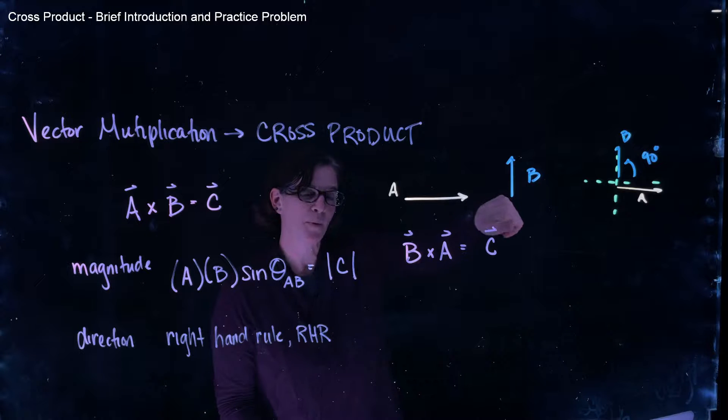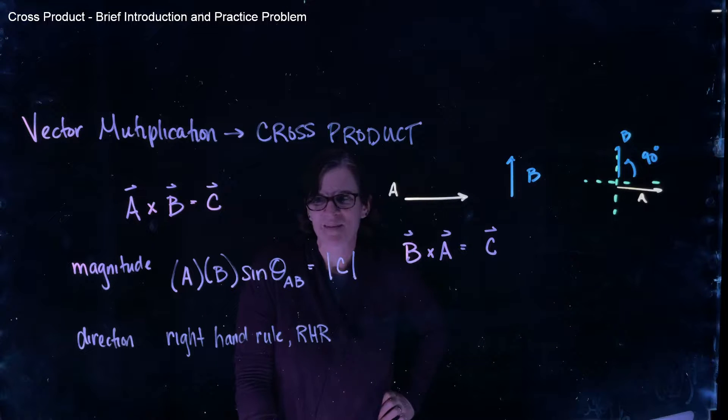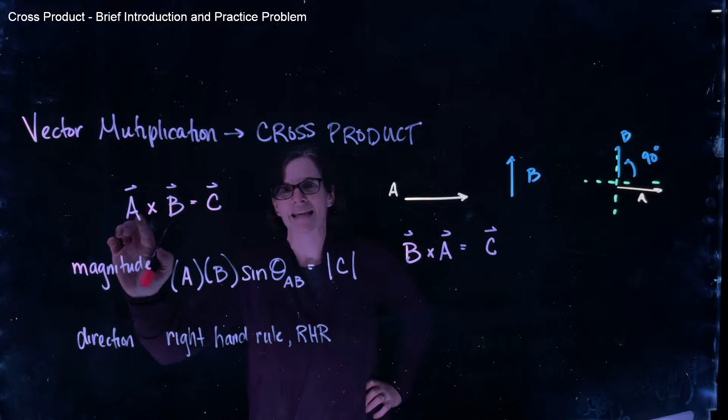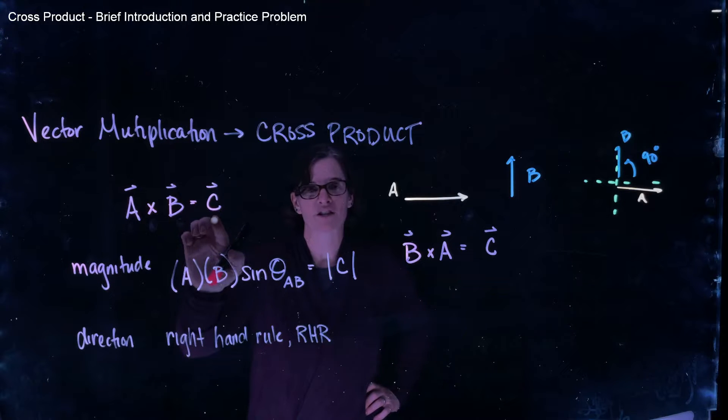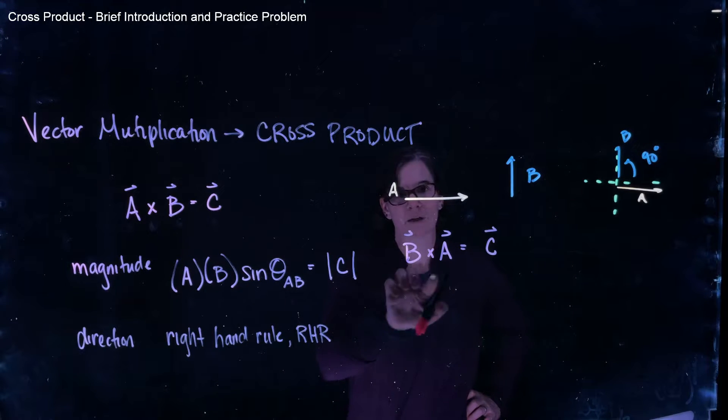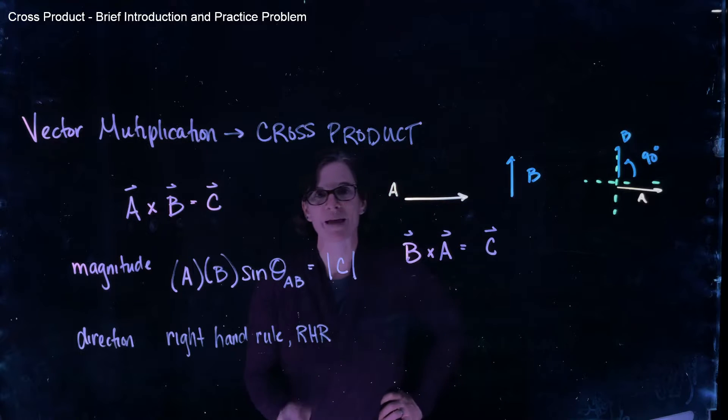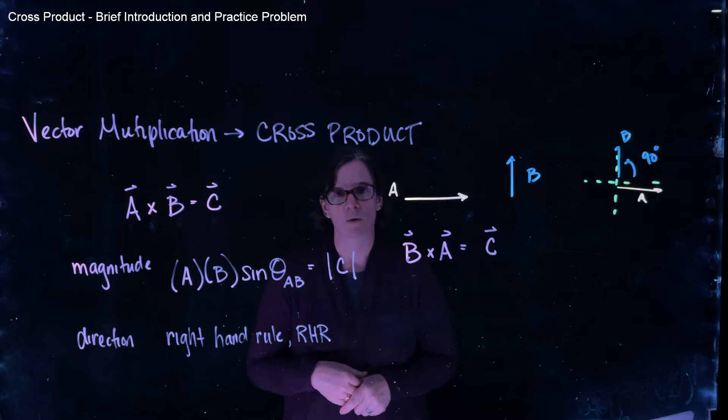And my thumb points in the direction of C. And what do we notice? It's opposite the direction we had before. So the direction of C is orthogonal to both A and B. But if I cross A cross B, the direction of C is opposite than my B cross A. So which vector comes first matters in a cross product for the direction of our resultant. Not so much for the magnitude of that resultant, but for the direction.